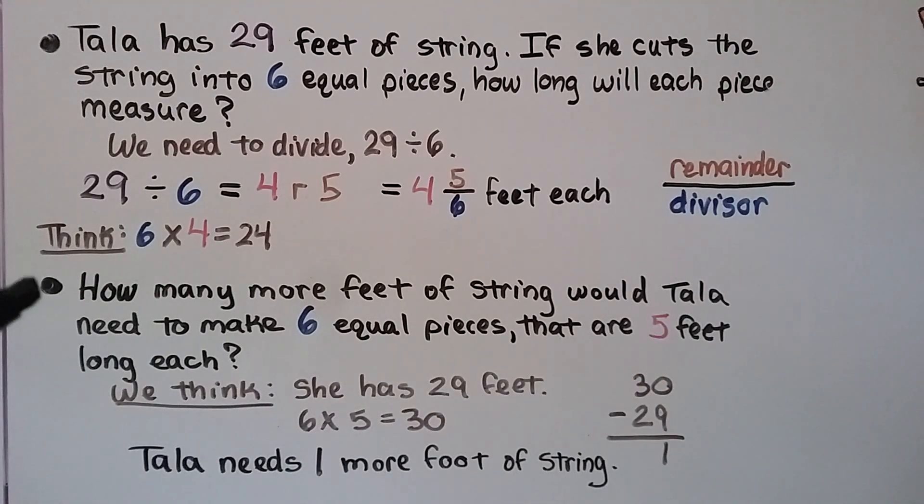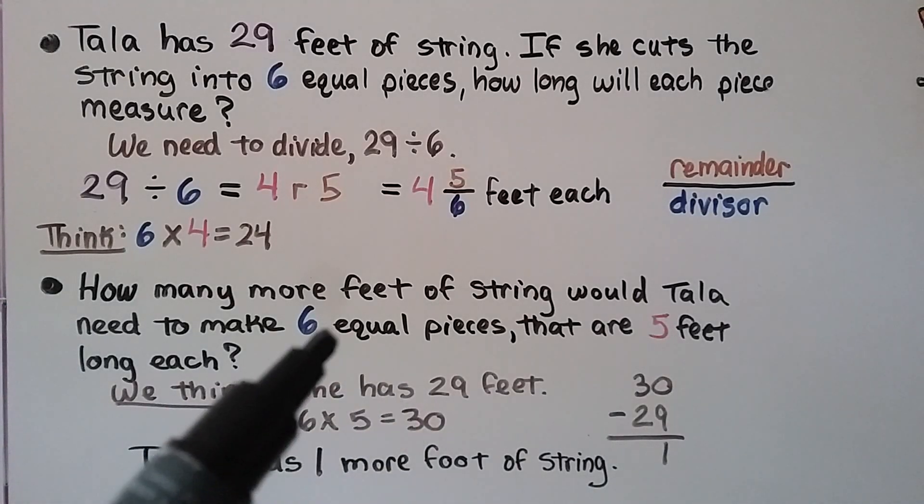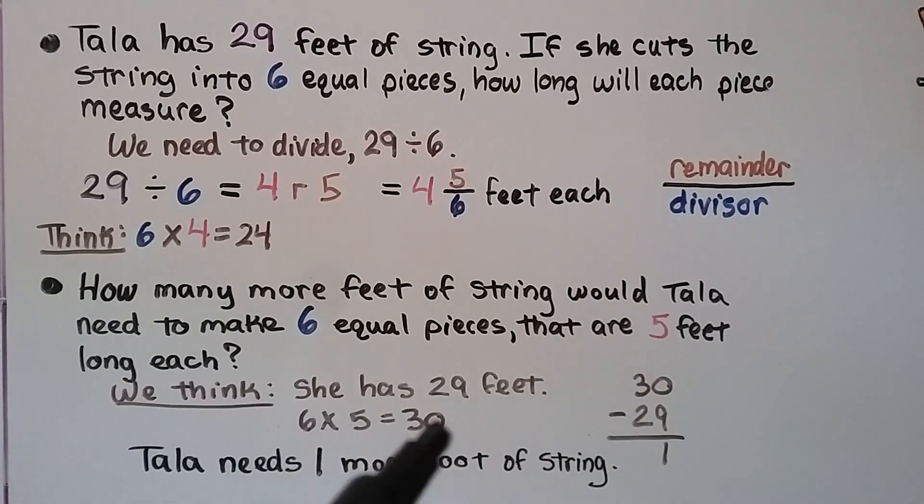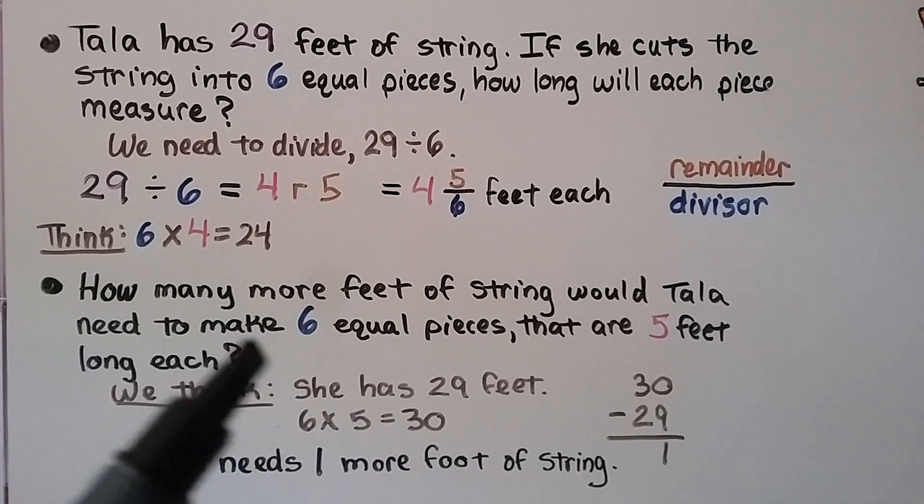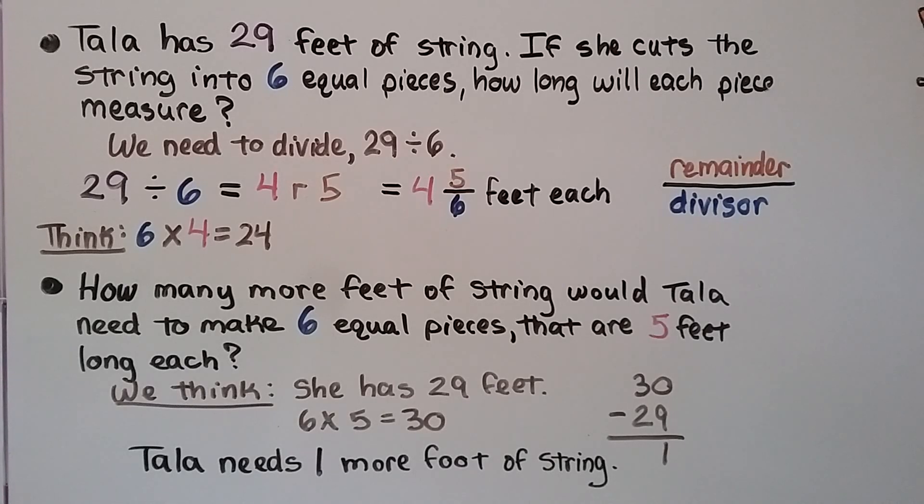Now, how many more feet of string would Tala need to make 6 equal pieces that are 5 feet long each? And we think, she has 29 feet, and 6 times 5 is equal to 30. 6 pieces, 5 feet long, that would be 30. And 30 minus 29 is 1, so she needs 1 more foot of string, and she can make 6 equal pieces that are 5 feet long each.